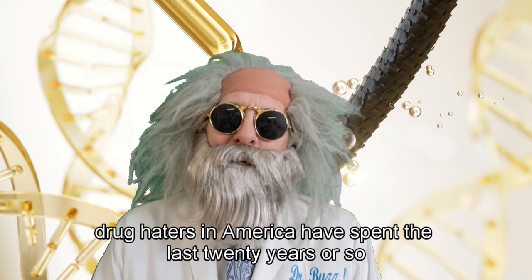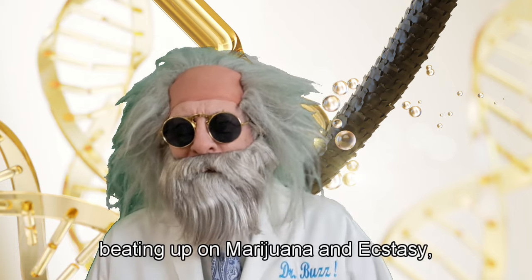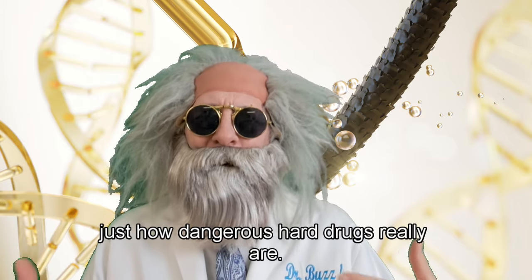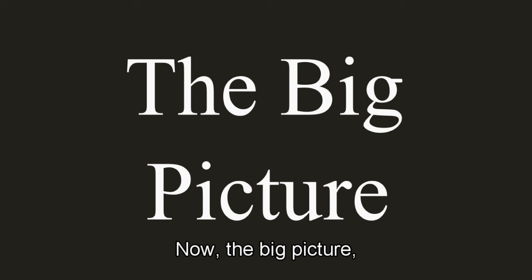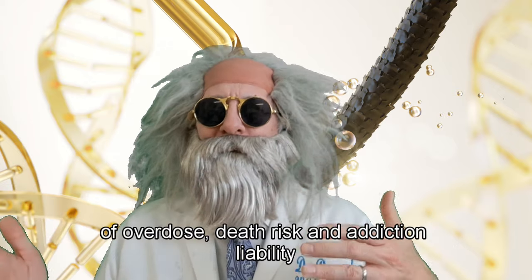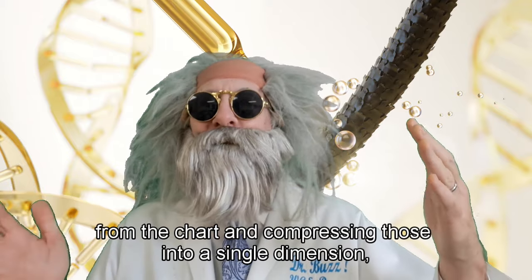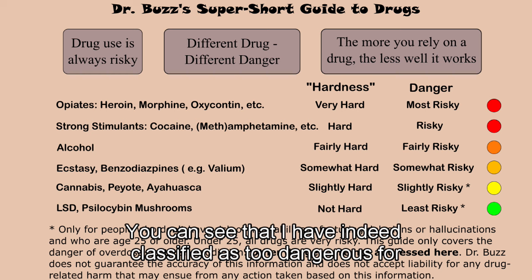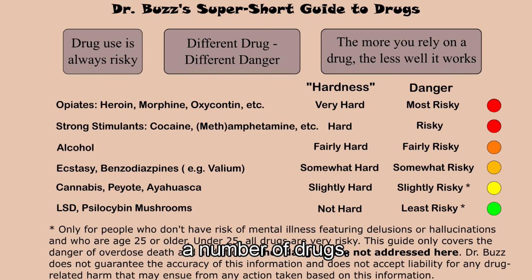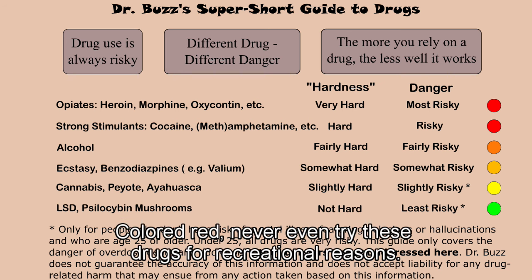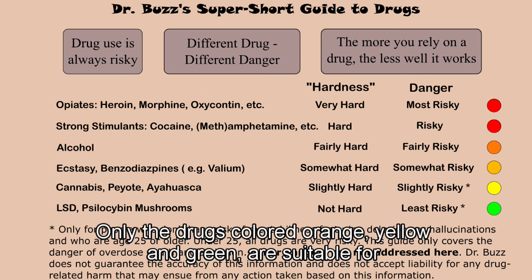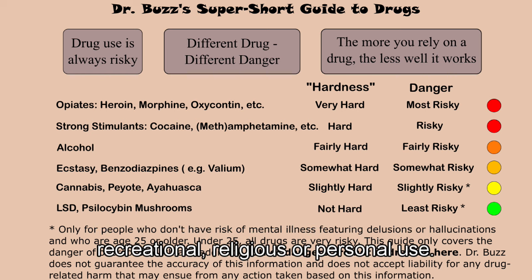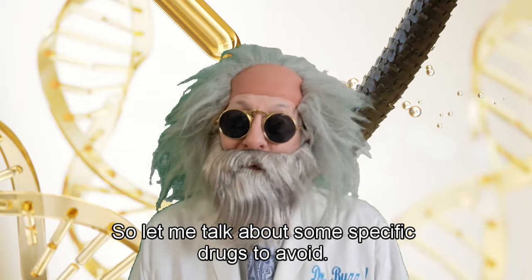Unfortunately, drug haters in America have spent the last twenty years or so beating up on marijuana and ecstasy and not reminding Americans just how dangerous hard drugs really are. Now, the big picture: taking the two dimensions of overdose death risk and addiction liability from the chart and compressing those into a single dimension, you get a simplified view. This is very simplified, but it gets the job done. You can see that I have classified as too dangerous for recreational use a number of drugs — colored red, never even try these drugs for recreational reasons. Only the drugs colored orange, yellow, and green are suitable for recreational, religious, or personal use. So let me talk about some specific drugs to avoid.